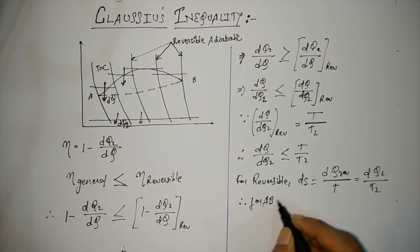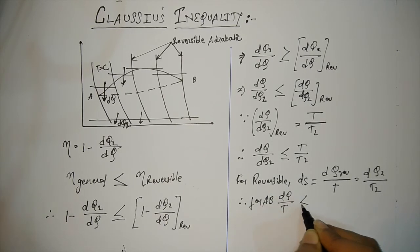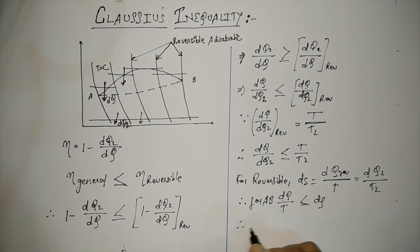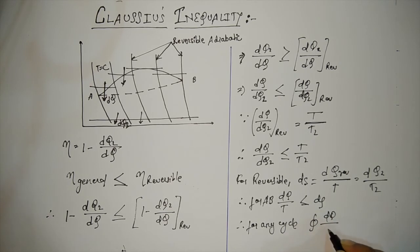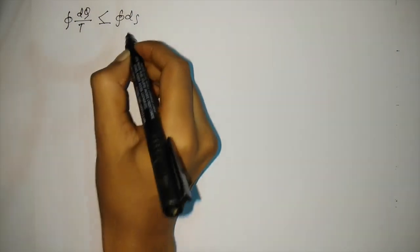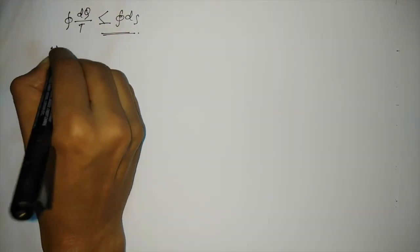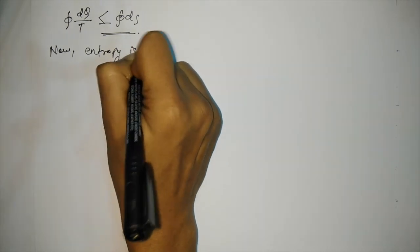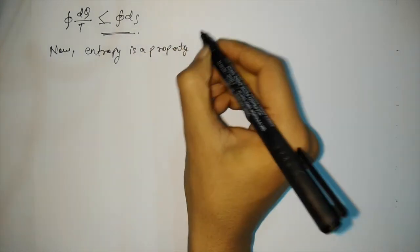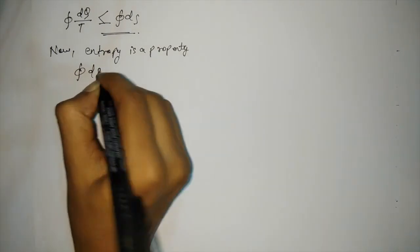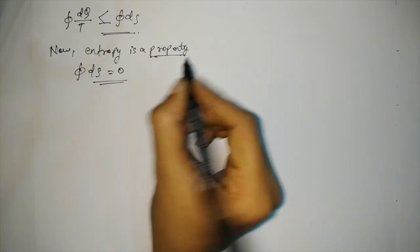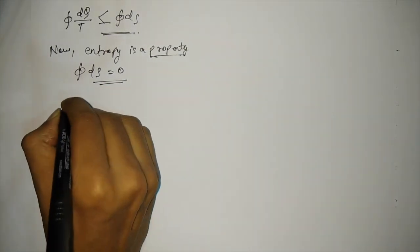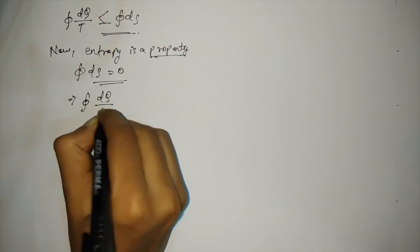Therefore, for ab, dq/t ≤ ds. Therefore, for any cycle, the cyclic integral of dq/t ≤ cyclic integral of ds. We know that entropy is a property, and the cyclic integral of entropy equals 0 since it is a property. This implies that the cyclic integral of dq/t ≤ 0.